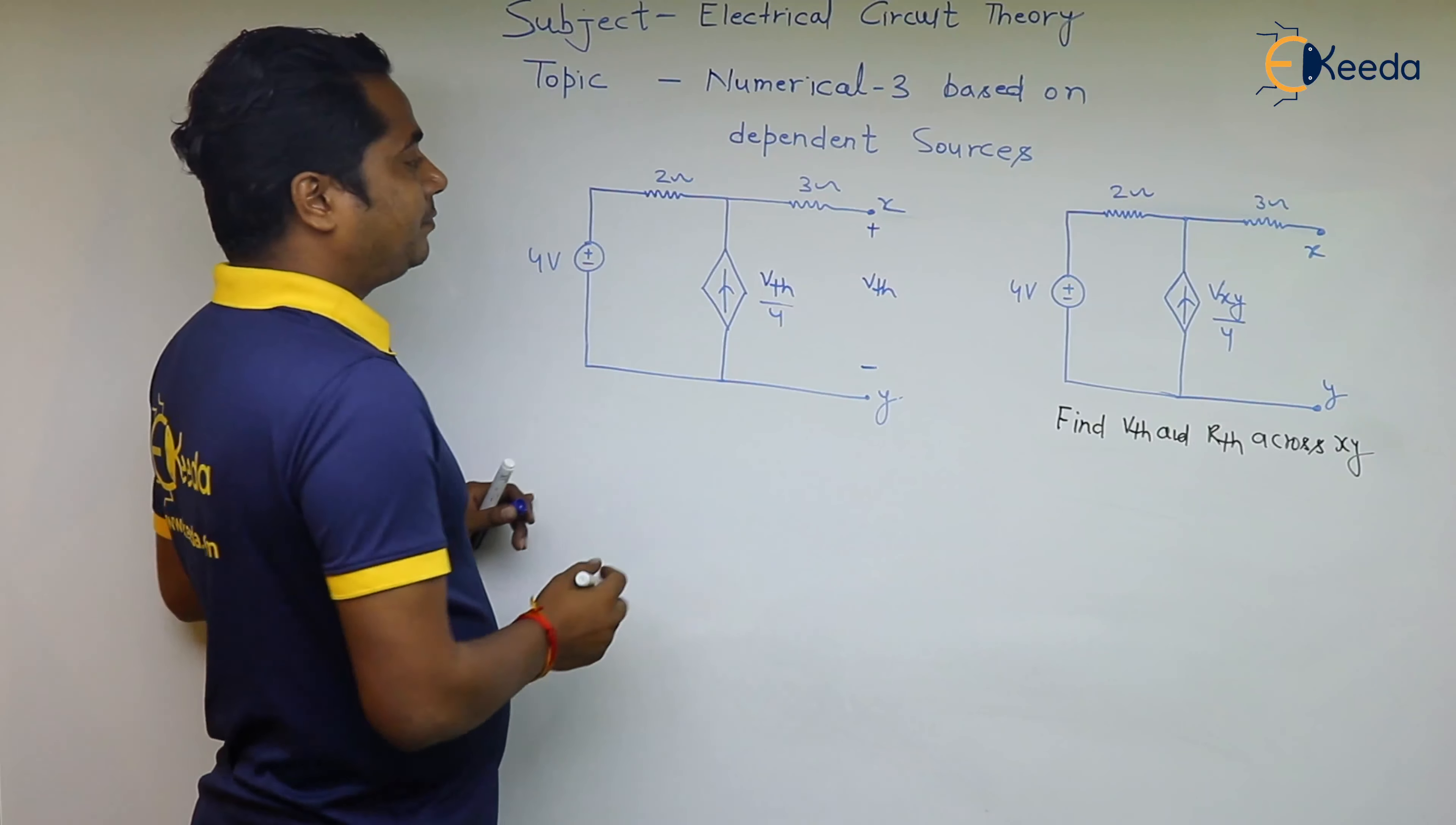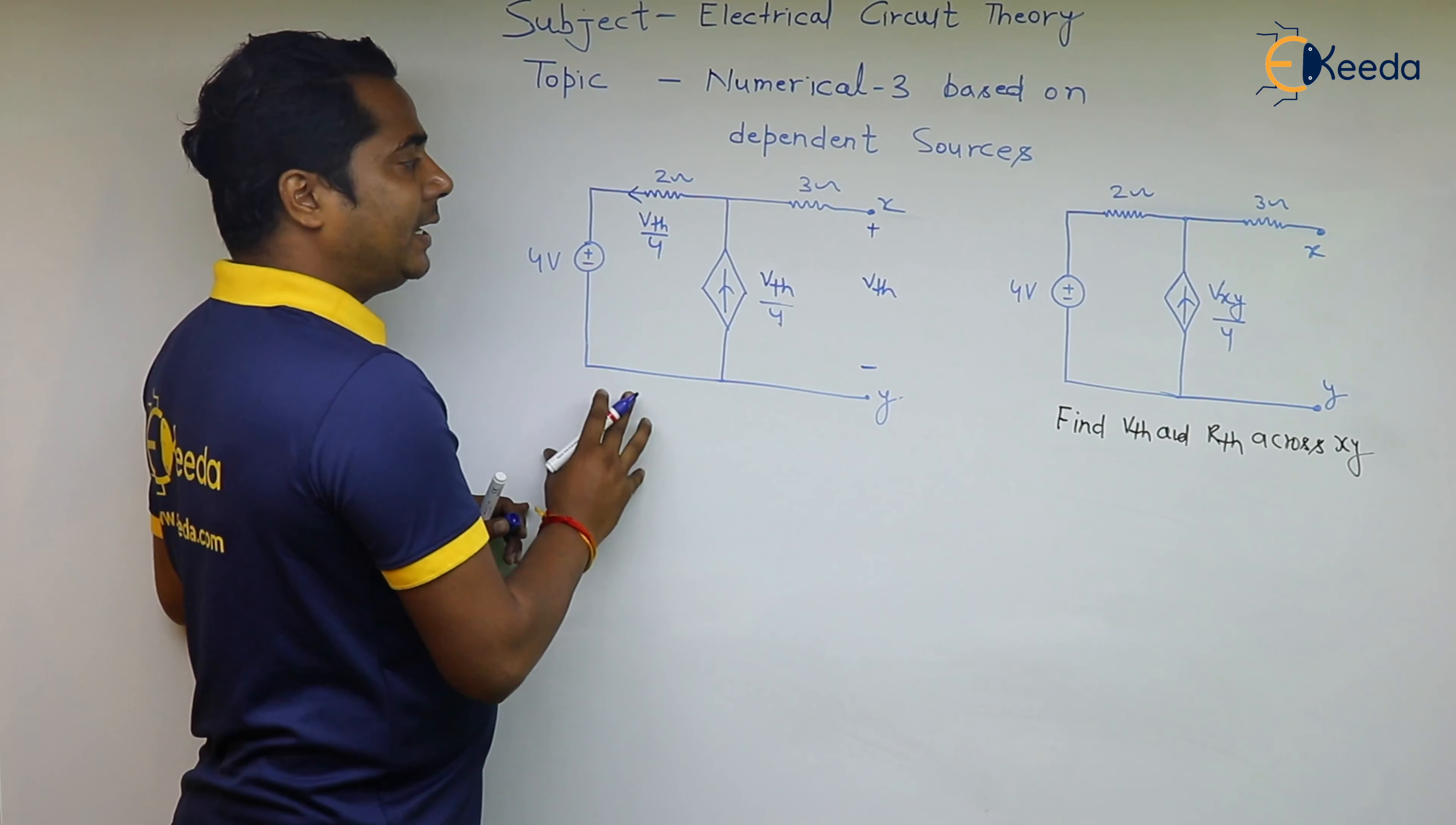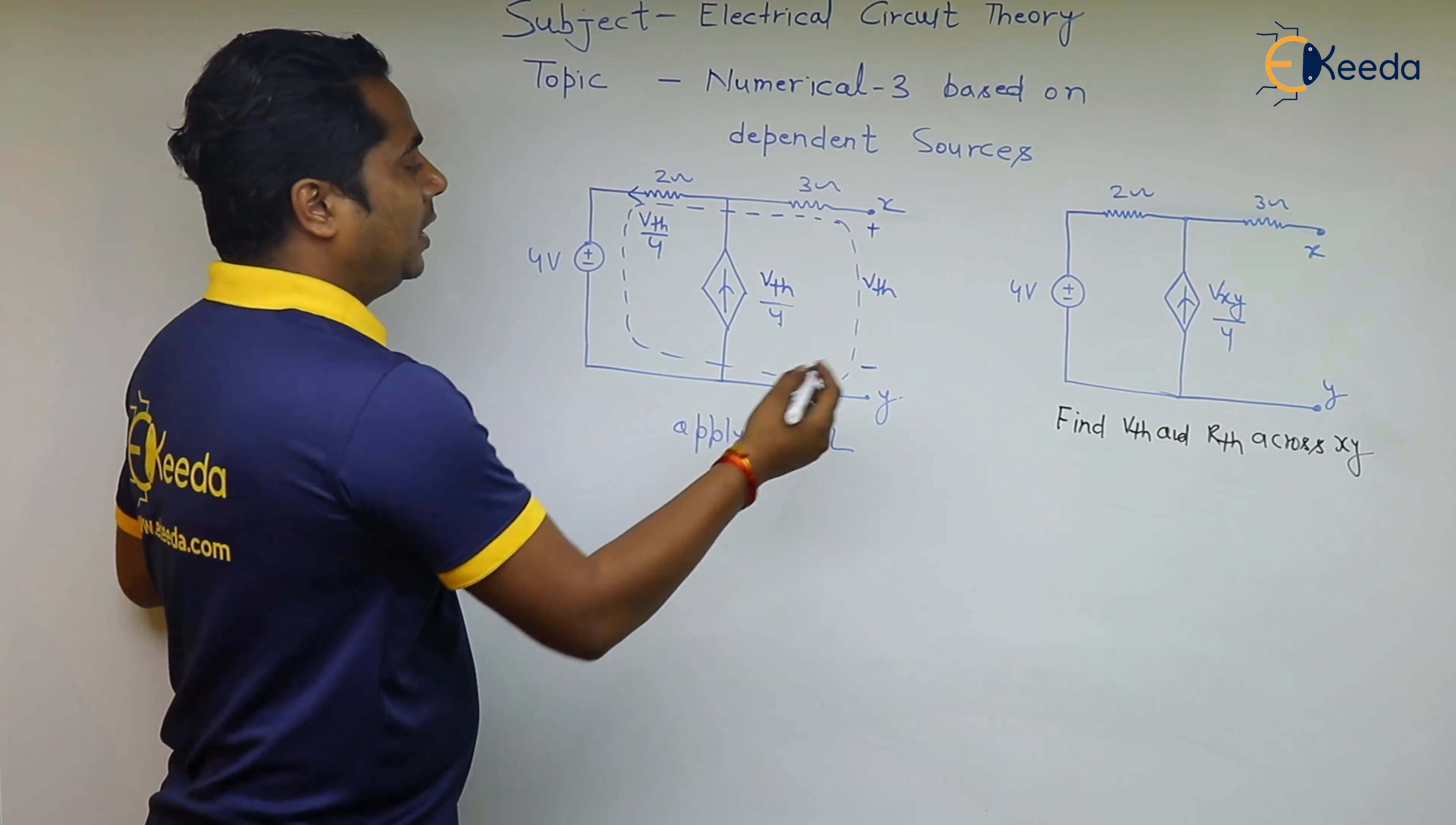And now there will be no current here in this side. Whatever the current Vth by 4 is, it is directly flowing through this. So in 2 ohm resistance, the current is Vth by 4. We can apply the KVL. There will be no current in this 3 ohm resistor, so we can apply KVL like this.